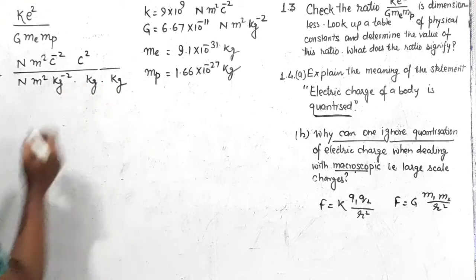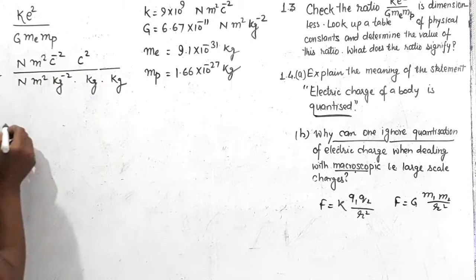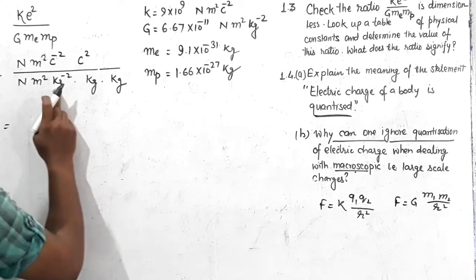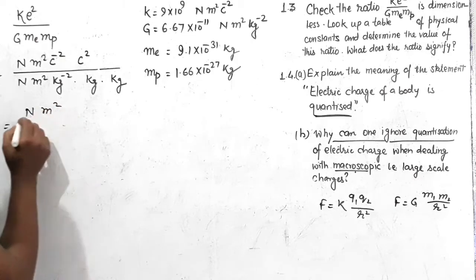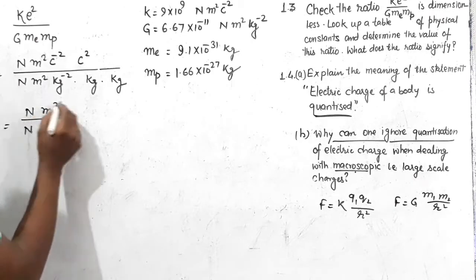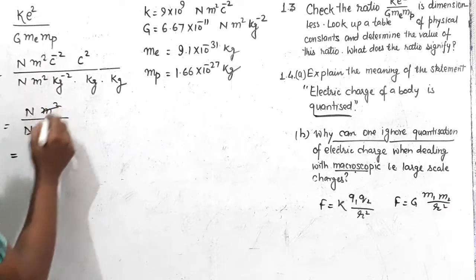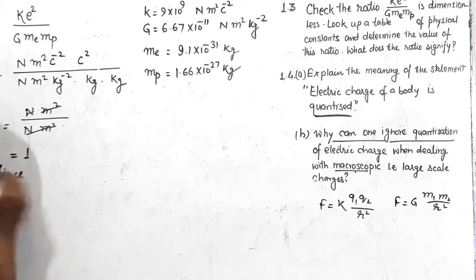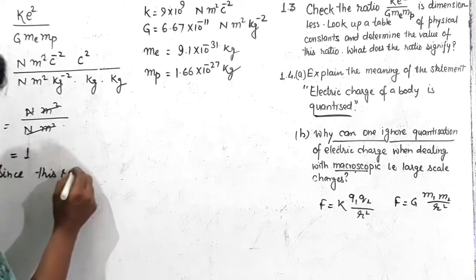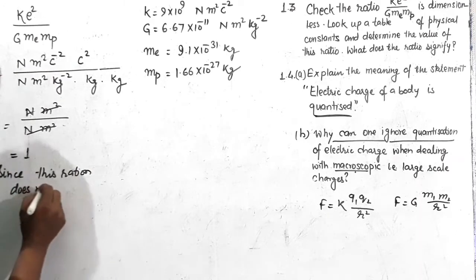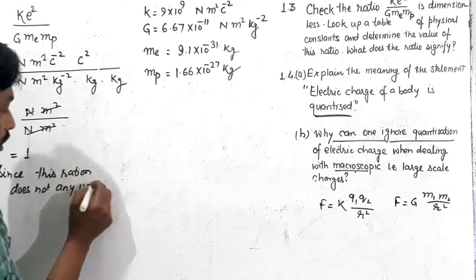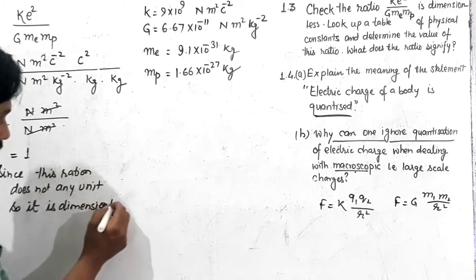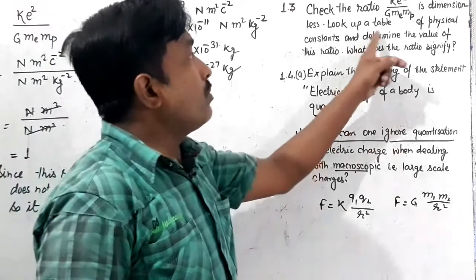The mass of electron has unit kg and mass of proton also has unit kg. Now observe: Coulomb⁻² in K cancels with Coulomb² from e². Then kg⁻² in G cancels with kg·kg (= kg²) from me and mp. This leaves Newton·meter² in the numerator and Newton·meter² in the denominator, which cancel each other. The result is 1 — no units remain. Since this ratio has no unit, it is dimensionless.